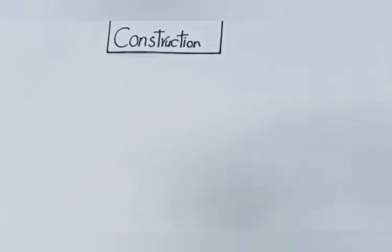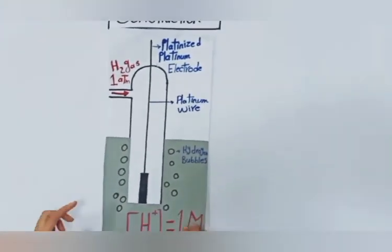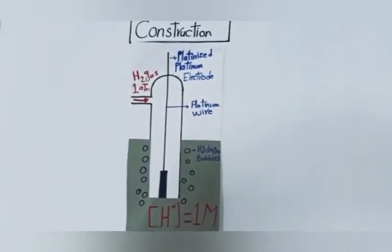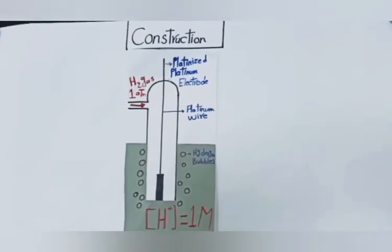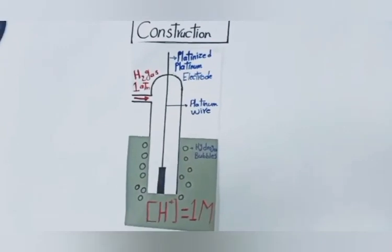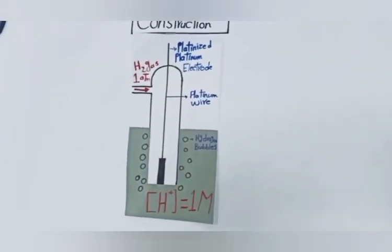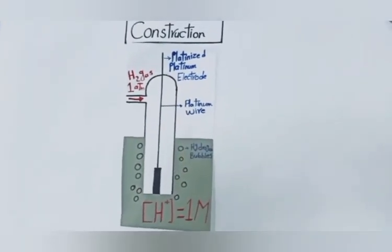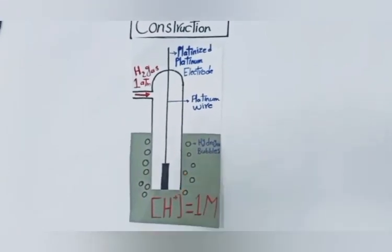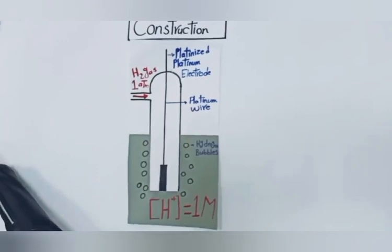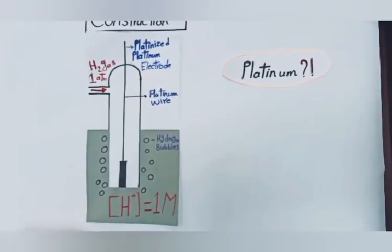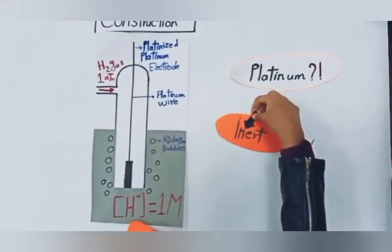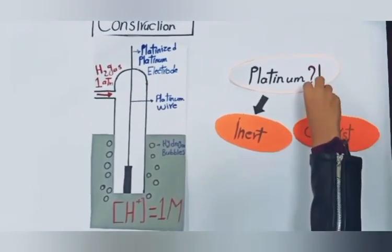Let's talk about the construction of the standard hydrogen electrode. It consists of an acid solution, for example HCl, with a hydrogen ion concentration equal to one molar, and hydrogen gas entering a tube at a pressure of one atmosphere. The electrode is a platinized platinum electrode, which consists of square pieces of platinized platinum connected to a platinum wire, on the surface of which electrons can be exchanged.